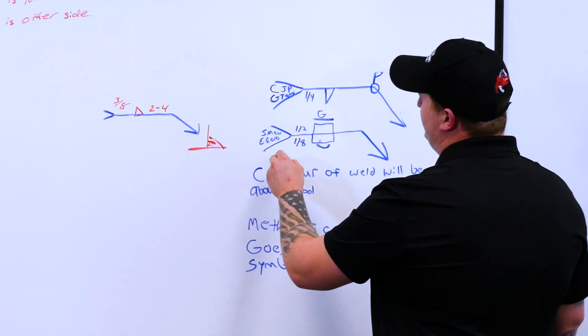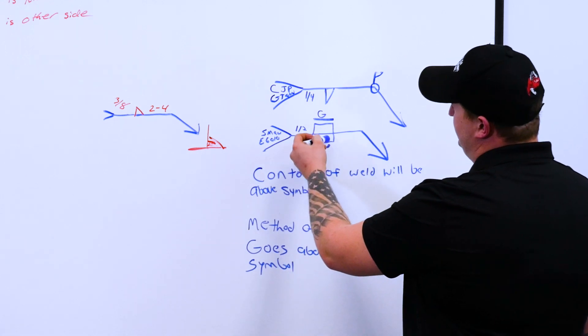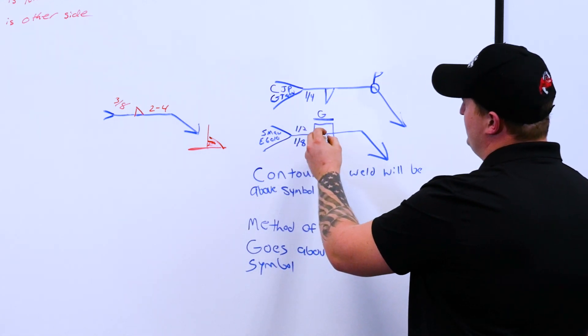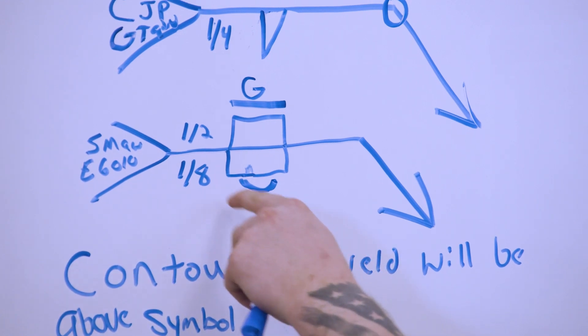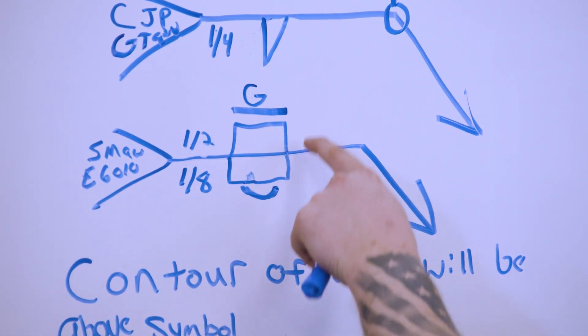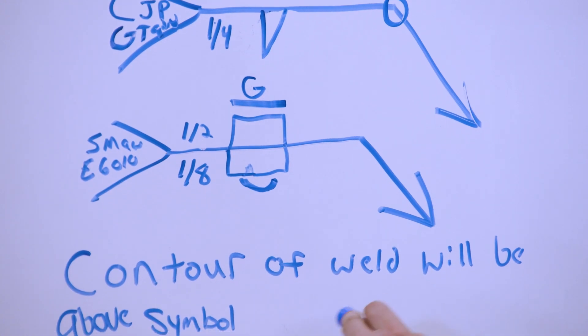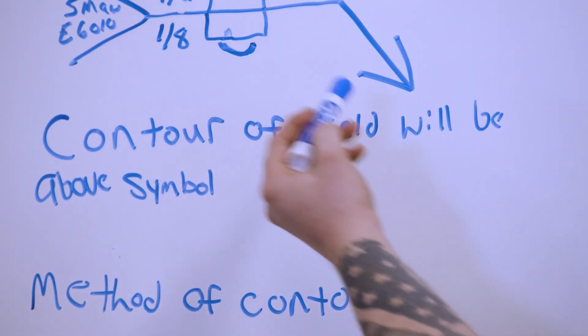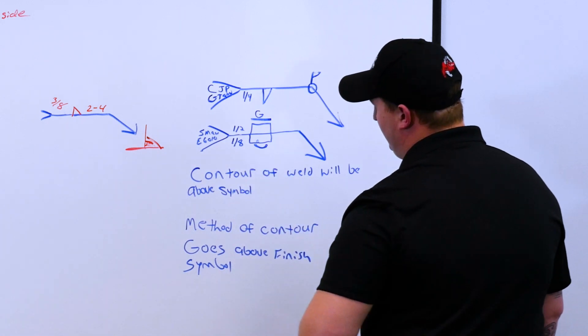So then we're going to go down here to our second one. We have symbols on both sides of the line, the arrow and the other. These are slot symbols. So you see here, we've got our size, one's going to be a half inch, one's going to be an eighth inch. Then you see we've got two more symbols up here. So the contour of the weld will always be above the symbol, or below it if you're on the arrow side.